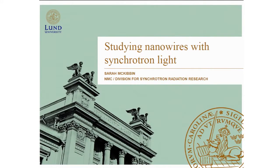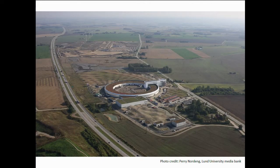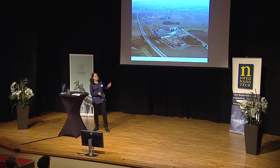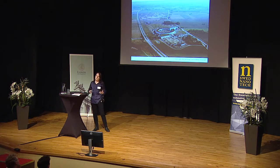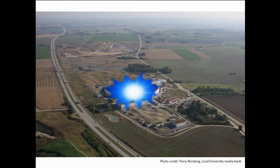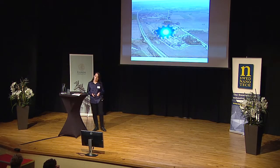Before I get into what exactly a synchrotron is and what it does, I'd like to show you a picture of one. This is the MAX 4 facility, a recent aerial photograph showing the central storage ring. It's a very large facility, and synchrotrons are usually very large research facilities which require funding from many different international government and industrial partners. Basically, synchrotrons can act like a very intense light source, and we can use this light to investigate our nanostructures — in particular, at the NMC, our nanowire devices.